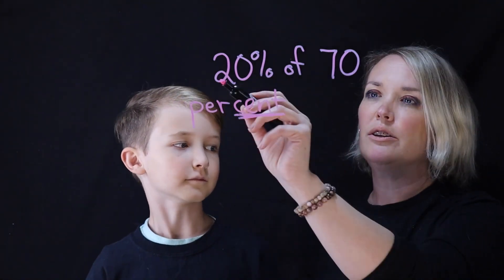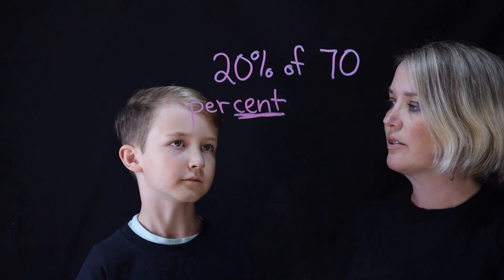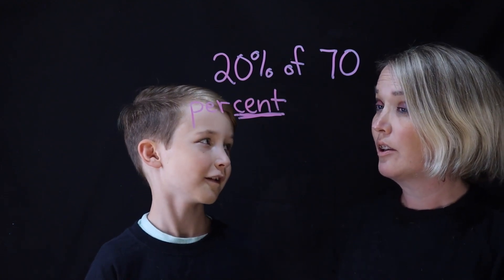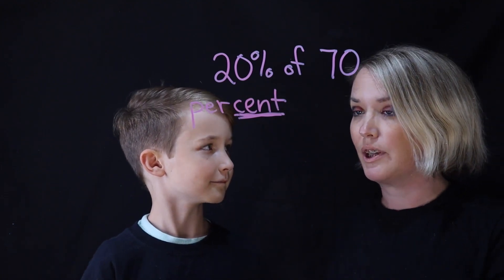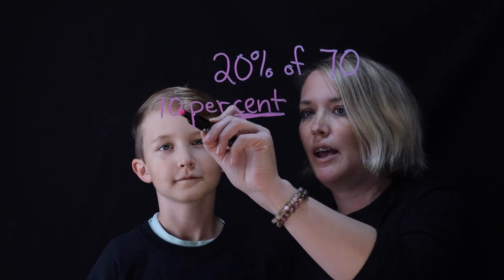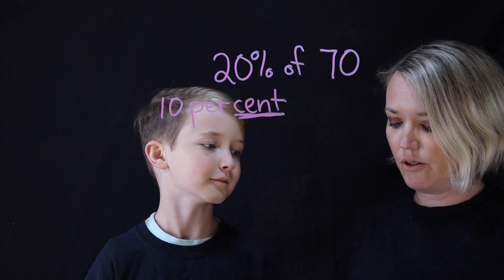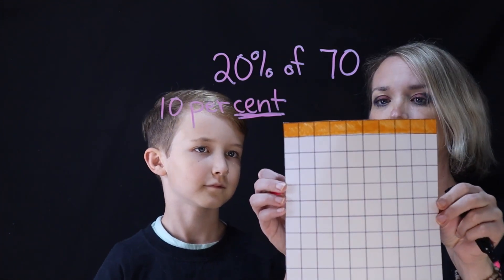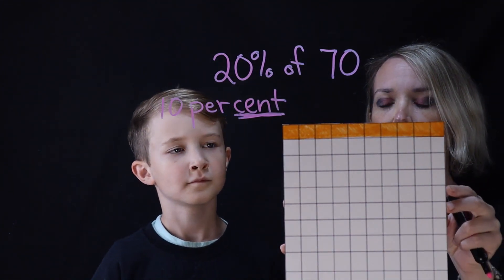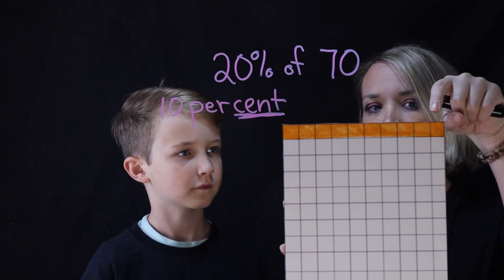So we're going to do 20% of 70. How would you like to do this? I like 10% better. So if I just write 10, it's 10 per hundred. So I've got this here and we've got 100 little boxes here.